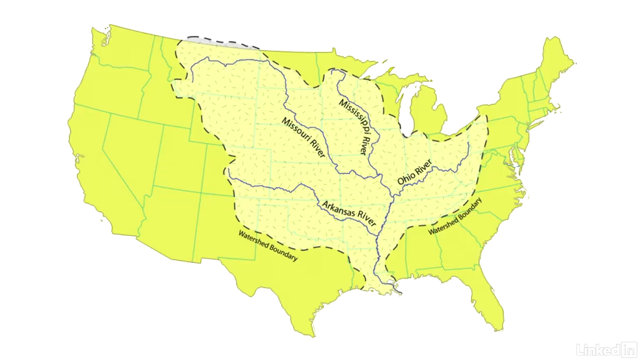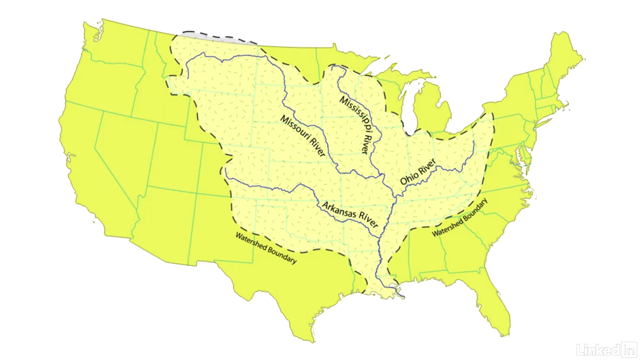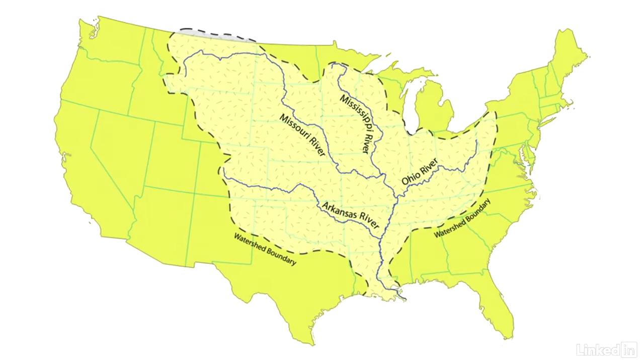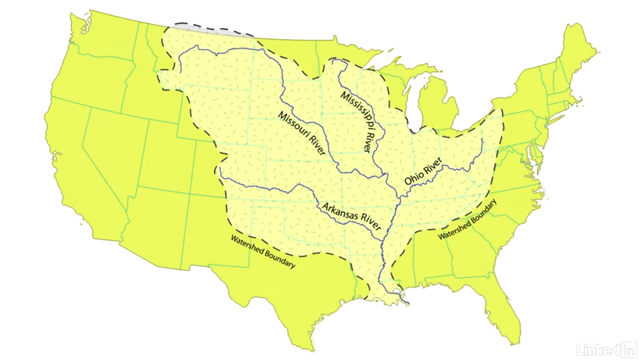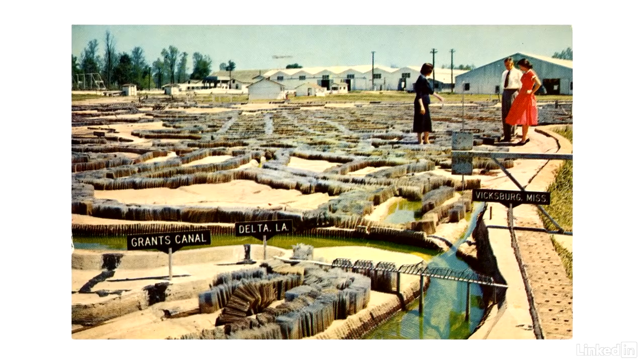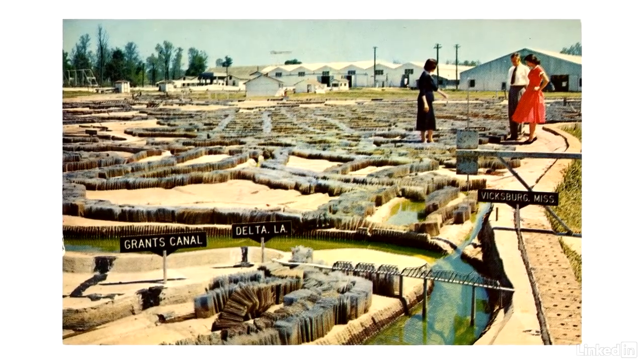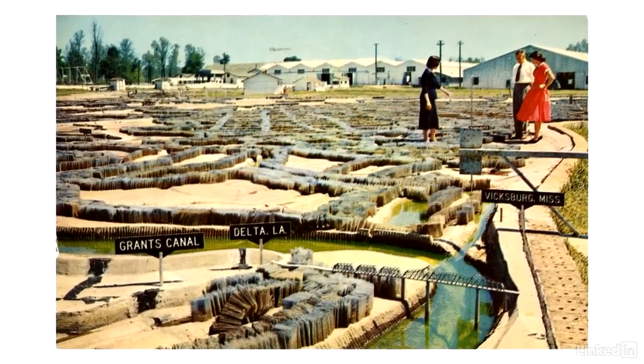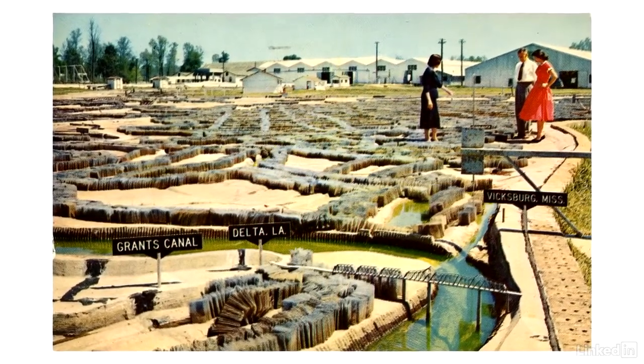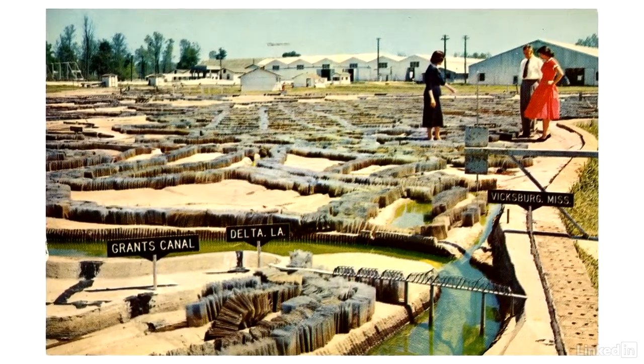From the 1940s to the 1960s, the US Army Corps of Engineers built a scale model of the entire Mississippi River Basin — a huge part of the continental United States scaled down to the size of a large park. Their goal was to understand how flooding affected communities along the river and how damage could be reduced through the use of man-made structures like levees.